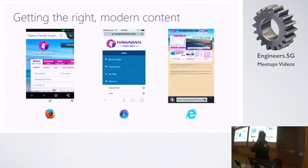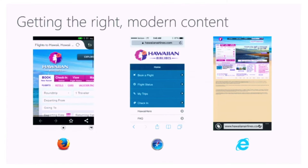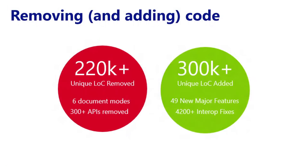So what they did was: enough. Microsoft created this rendering engine — a fork from the past. They took old IE 11, split everything, threw out about 220,000 lines of code. Real code, not whitespace. Six document modes and 300 APIs removed.